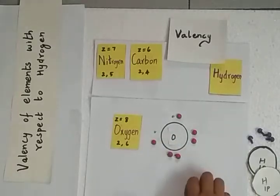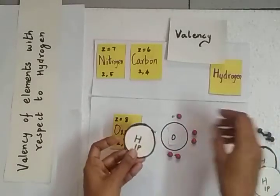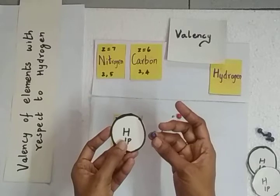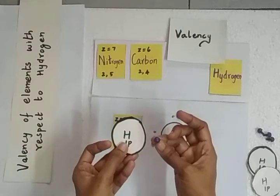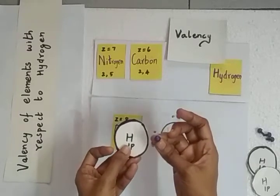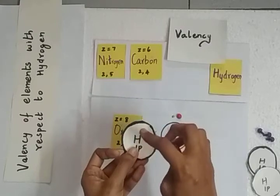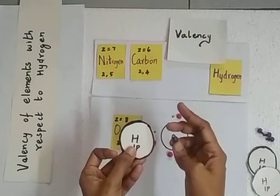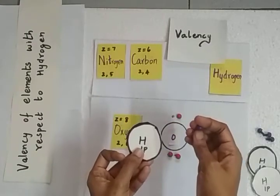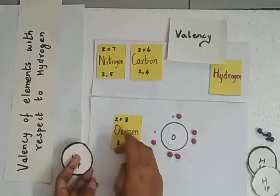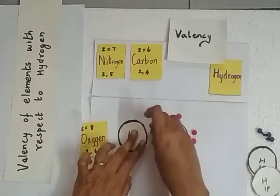Oxygen will combine with hydrogen atoms. Hydrogen has only one electron, which is its valence electron, and it needs one more to complete its stability — like helium with 2 electrons in its K shell. So hydrogen will share one electron with oxygen.